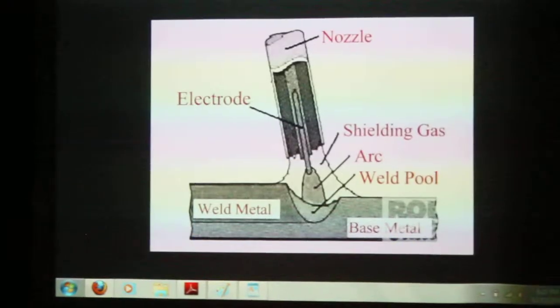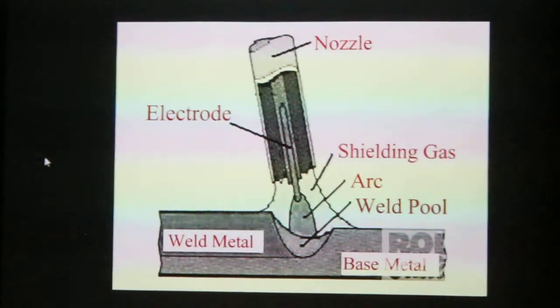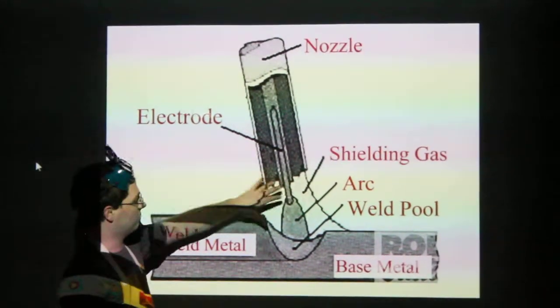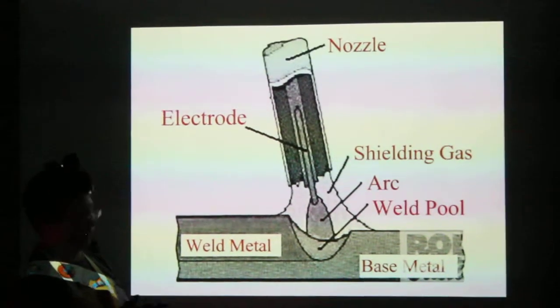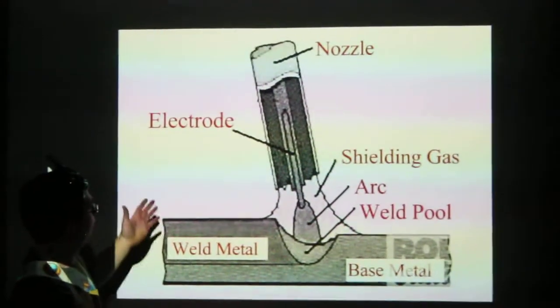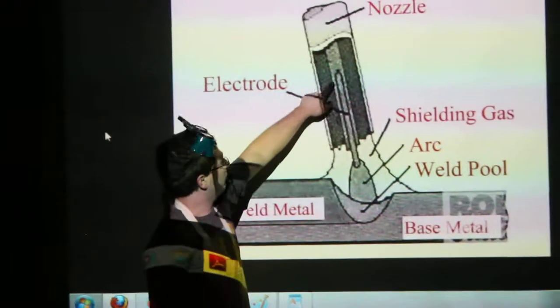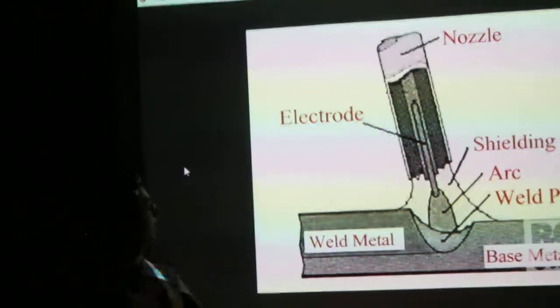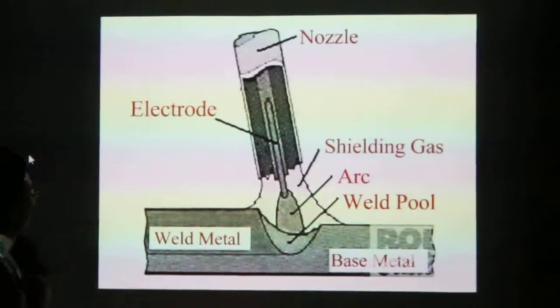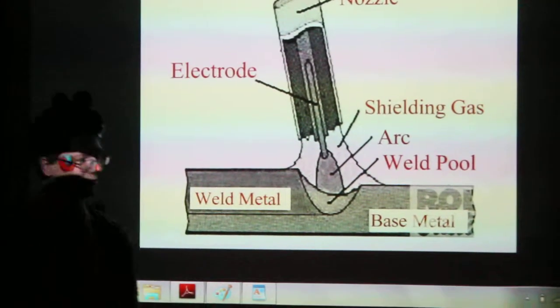The type of weld we're going to do is MIG. It's equivalent to like a hot glue gun compared to just melting two things together with a torch and hoping that everything goes well. This is what the end of the nozzle looks like, blown up, and this is in the middle of the weld. You have the MIG gun, which I failed to get a photo of.